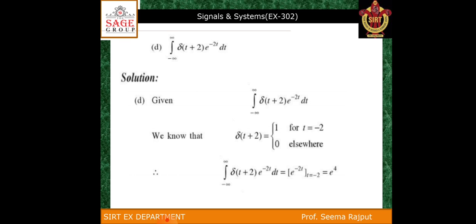Another example is the integration from minus infinity to infinity of δ(t+2) times e to the power minus 2t dt. Here δ(t+2) equals 1 for t equal to minus 2 and 0 elsewhere. Replacing δ(t+2) with 1, the remaining function is e to the power minus 2t. Putting t equal to minus 2, the answer is e to the power 4.